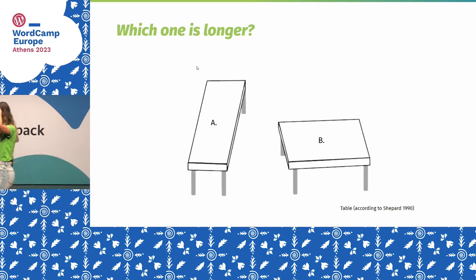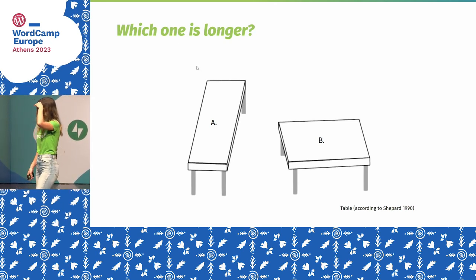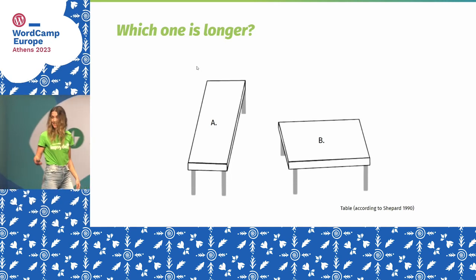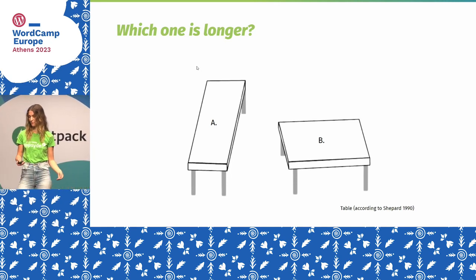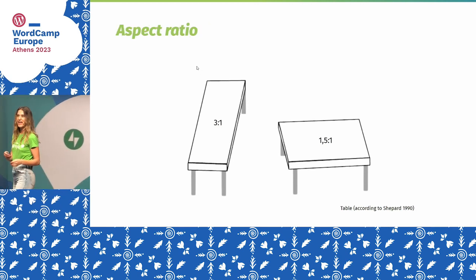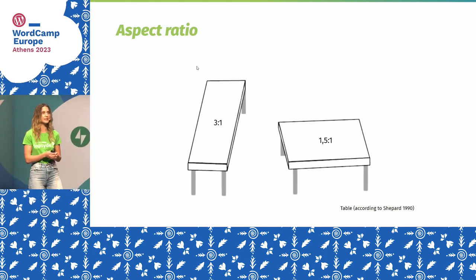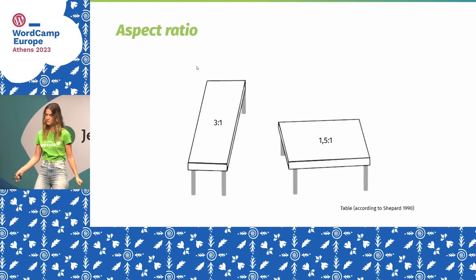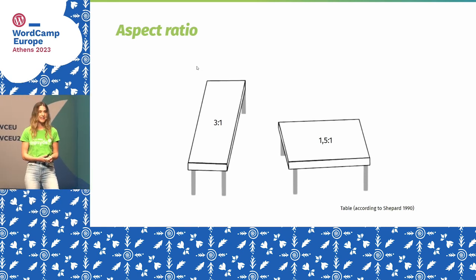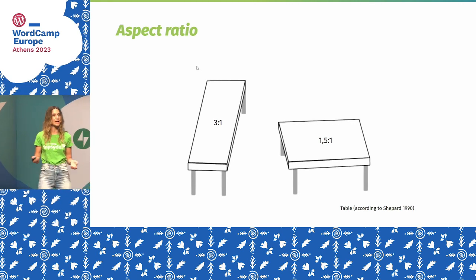And who wants to say nothing? Okay, some people don't want to say anything. So it's interesting because most people think table A is longer. The aspect ratio is 3-to-1 for table A and 1.5-to-1 for table B. But the truth is they are the same size.